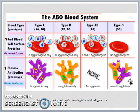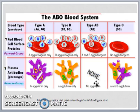Finally, individuals who are group AB express A and B antigens on the red cell surfaces and so by definition, in their plasma, they lack anti-A and anti-B. RHD positive individuals have D antigen on the red cells while RHD negative individuals lack the D antigen on the red cells.